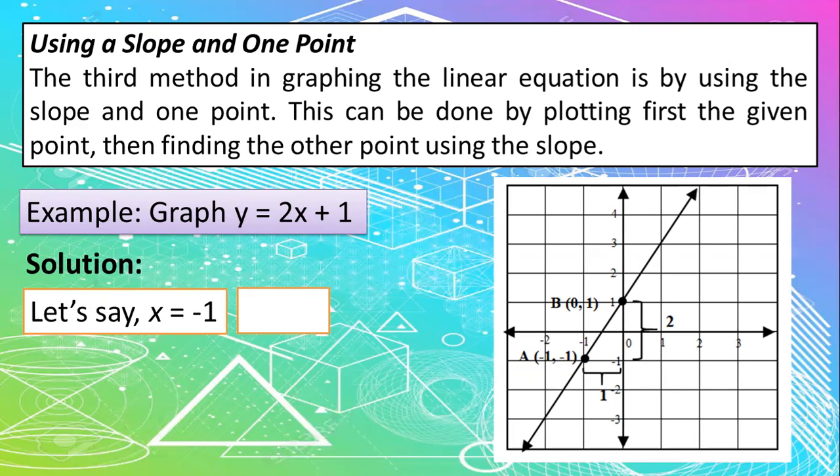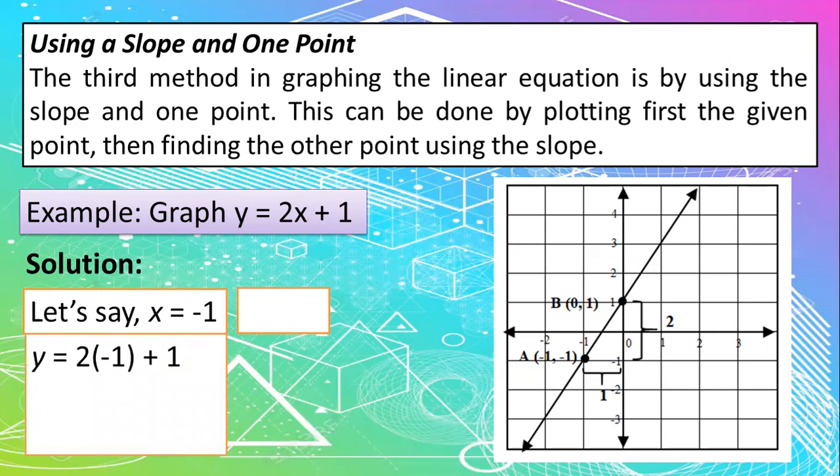Because we'll just put possible values. So when we say that x is equal to negative 1, what would be the solution? All you need to do is to substitute the given value of x. So we have now, y is equal to negative 2 plus 1 is equal to y is equal to negative 1.